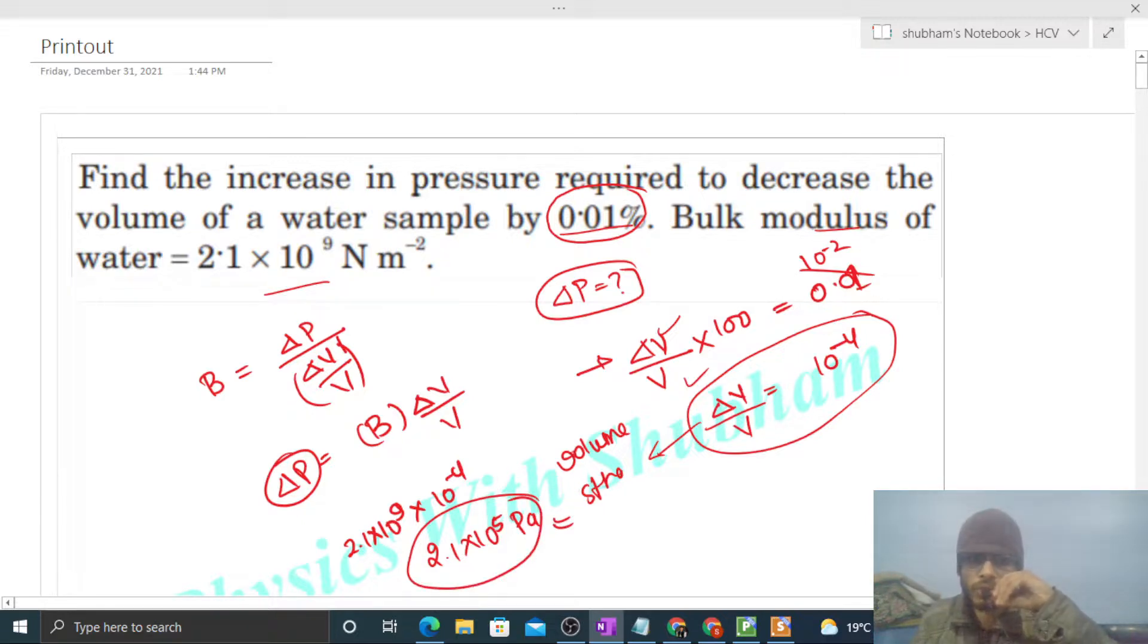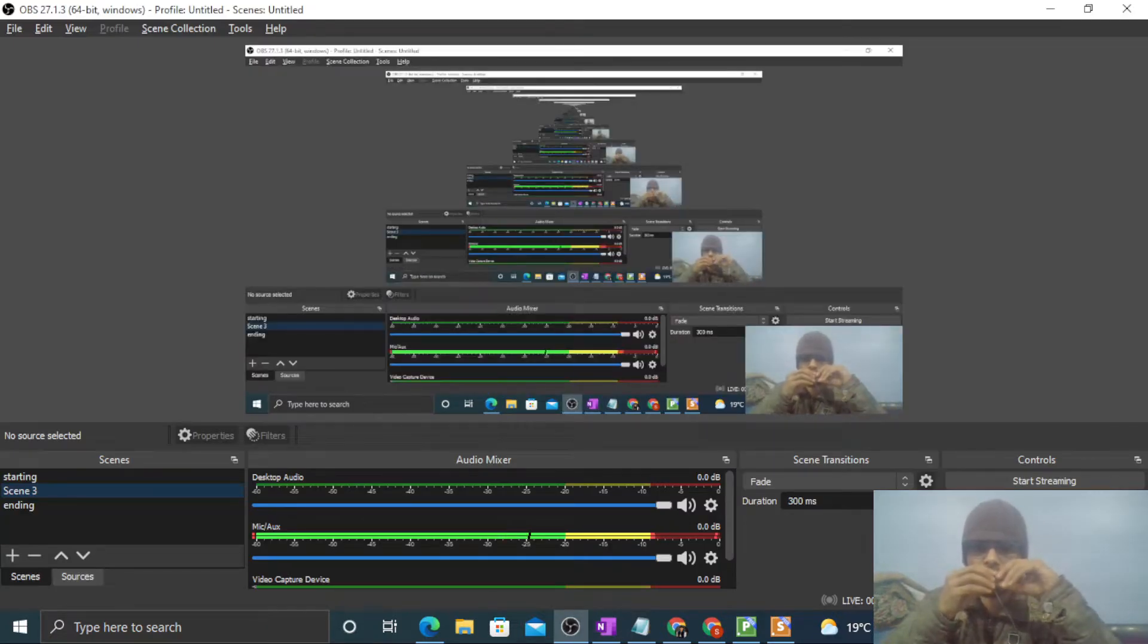So this is the pressure increase required so that the volume of the water sample will be decreased by 0.01%. I think you have understood. Let me know if you still have any confusion, we can discuss further. Keep working hard, best of luck.